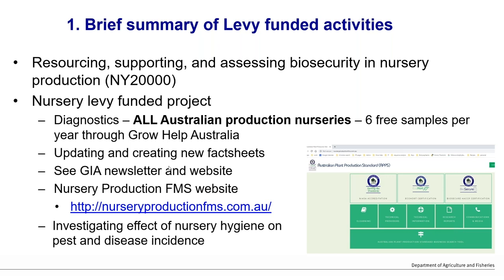The project is also updating and creating new fact sheets and other resources including these webinars, and conducting research into nursery hygiene and pest and disease incidents. That research is ongoing and results will be shared starting next year. Many fact sheets are available at the Australian Plant Production Standard website, and links will be sent after the webinar.